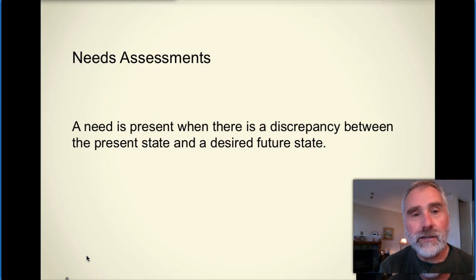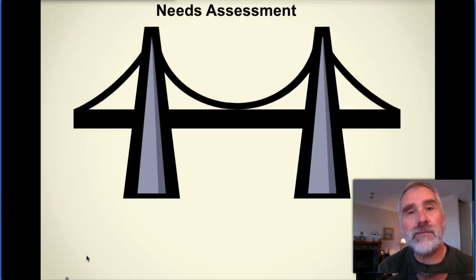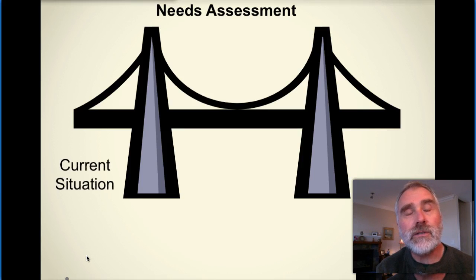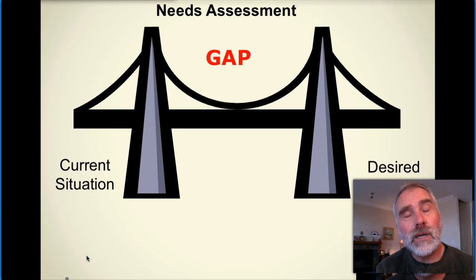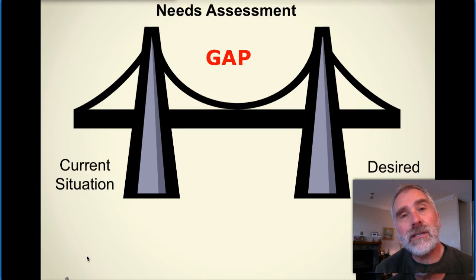As you can see on the slide, a needs assessment has to do with a need, and a need is present when there's a discrepancy between a present state and a future state. A needs assessment is kind of like building a bridge — the bridge goes from the current situation to a desired situation. If at the present time a course is not fulfilling the needs, or if technology has changed, knowledge has progressed, skills have developed, or procedures have changed, there's a gap that exists from the present state to the desired future state.